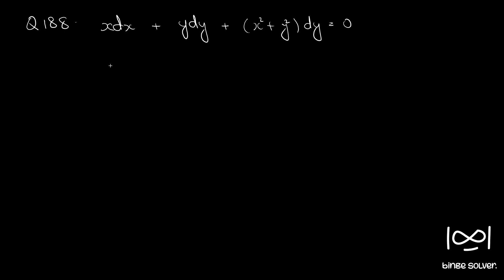Question number 188: x dx plus y dy plus (x square plus y square) dy equal to 0.